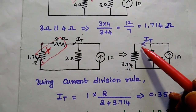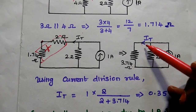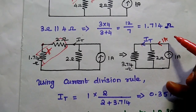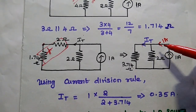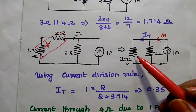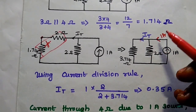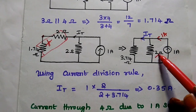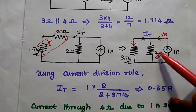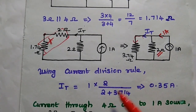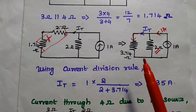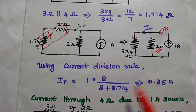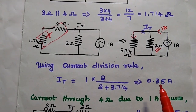Now we find the current through this branch using the current division rule, since the total current into the circuit is 1 ampere. The current through this branch = total current × opposite resistance / sum of resistances = 1 × 2 / (2 + 3.714) = 0.35 ampere.